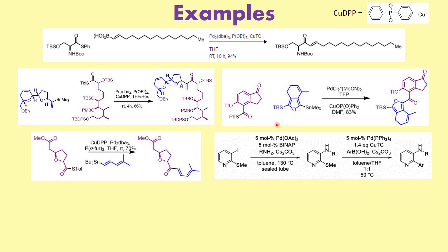In the first step, a palladium catalyst with BINAP as a ligand and an amine are used. We have an aryl iodide as well as a heteroalkyl thioether. The first step is Buchwald coupling. In the next step, the copper co-catalyst is used in this reaction with the heteroalkyl thioether — this is perfectly set up to form the carbon-carbon bond. In this case, we have not formed a ketone because the coupling partner was a heteroalkyl thioether rather than a thioester, so what we have formed is a simple carbon-carbon bond.